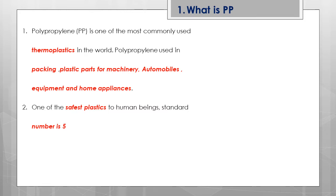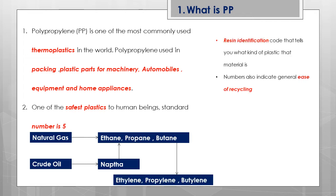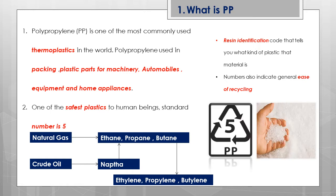Before understanding the number five, let us understand where the raw material for PP comes from. Natural gas outputs ethane, propane, and butane. Similarly, crude oil produces naphtha, which is a byproduct of crude oil. Naphtha further helps produce ethane, propane, and butane, which then lead to the production of ethylene, propylene, and butylene — the basic raw materials for PP. You can see in the image the granular crystal parts that are the raw materials derived from naphtha, which are further processed to produce PP grade material.